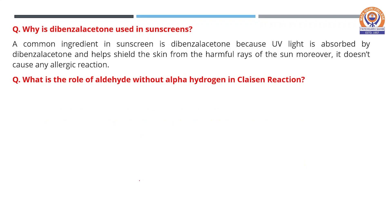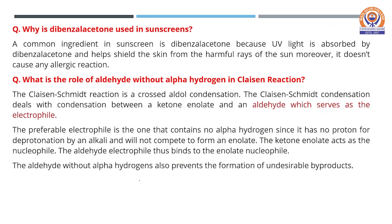What is the role of the aldehyde without an alpha hydrogen in the Claisen-Schmidt reaction? The role of benzaldehyde is that it has no proton for deprotonation by alkali, so it will not compete to form an enolate. The ketone enolate acts as the nucleophile, and therefore the aldehyde electrophile binds to the enolate nucleophile leading to the desired product. It also prevents the formation of undesirable byproducts.